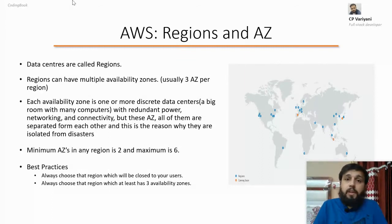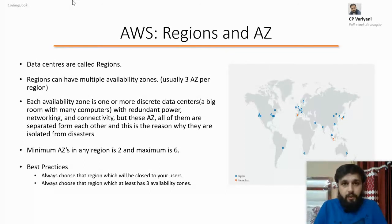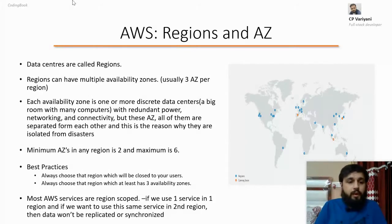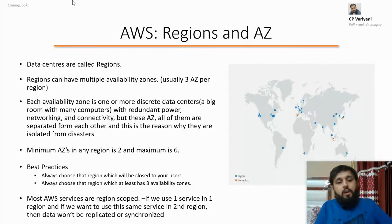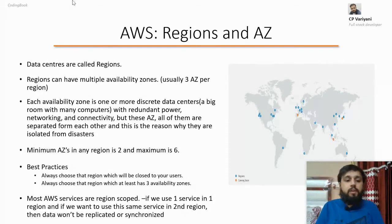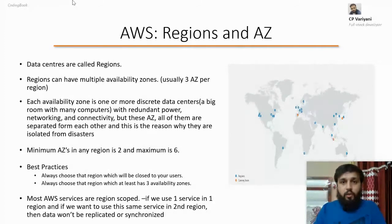One such example is AWS Aurora DB. AWS Aurora DB keeps six copies of your data across three availability zones. But if you have not chosen a region that has three availability zones, then you would not be benefited. That's why we should go for that region. Also, AWS services are region-scoped — meaning if you have one service in one region and you want to use the same service in another region, your data will not be replicated or synchronized.